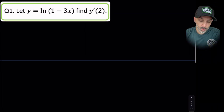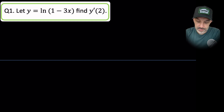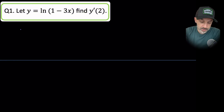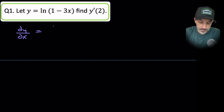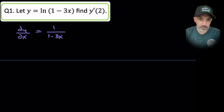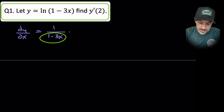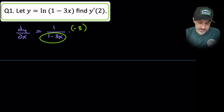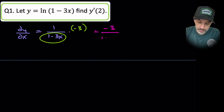Question 1: let y equal natural log of (1 minus 3x), find y prime of 2 — in other words, the gradient at x equals 2. We jump straight in with dy/dx. The derivative is found by 1 over f(x), which in this case is 1 minus 3x, multiplied by the derivative of that function. The derivative of 1 minus 3x using the power rule is negative 3, giving us minus 3 over (1 minus 3x).